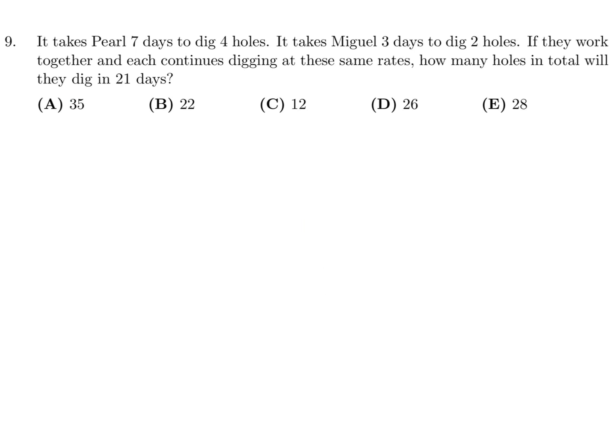It takes Pearl seven days to dig four holes. It takes Miguel three days to dig two holes if they work together. And each continues digging at these same rates. How many holes in total will they dig in 21 days? Basically, we're just doing a ratio here for Pearl. So in seven days, she digs four holes. So in 21 days, she would dig x amount of holes. And that's how we have to figure out. So cross multiply.